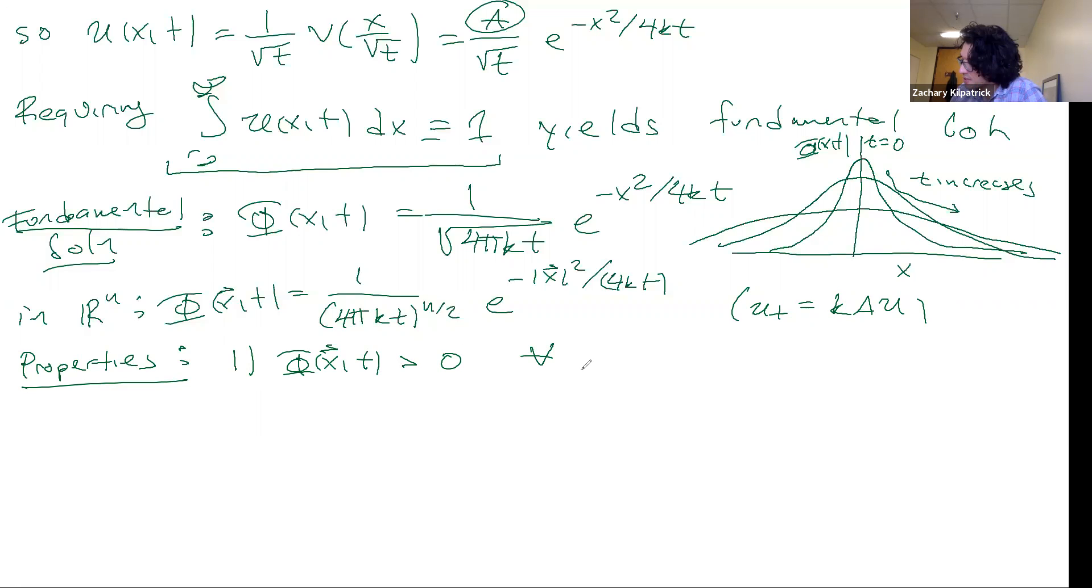For all X in Rn, and as long as T is greater than zero. What is it? It's a positive function multiplied by another positive function, so it has to be positive everywhere.